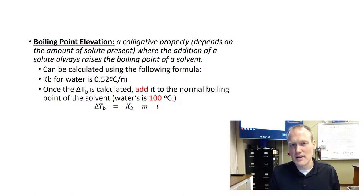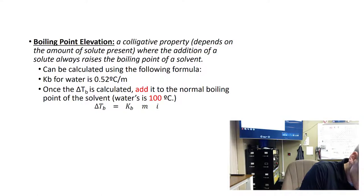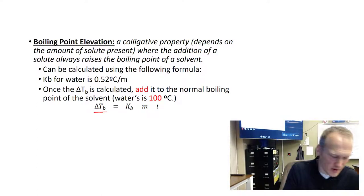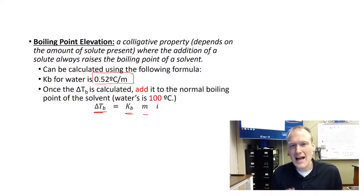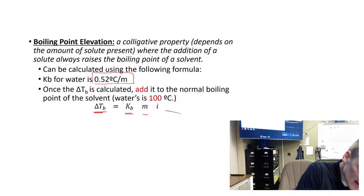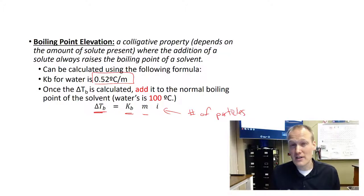The first colligative property is called boiling point elevation. This is when you add more solute and the boiling point will actually rise. For instance, if water typically boils at 100 degrees Celsius, if we add salt to that water it will actually raise the boiling point of the solution. There's a calculation we can do to figure out how much it will rise. Delta Tb is the change in boiling point. We have Kb, a constant of 0.52 degrees Celsius per molal solution. This m is a small m for molality, and then i is the number of particles.